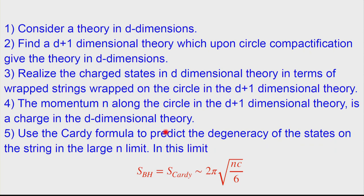The typical approach is: if you are interested in a d-dimensional theory with black holes, you first find the theory in one higher dimension, d+1. You find the theory which, upon circle compactification, is equivalent to the theory you are interested in. Then you relate the charged states in d dimensions — the black holes — to states of strings wrapped around the circle in the one higher dimensional theory, carrying various charges, winding, and momentum around the circle.